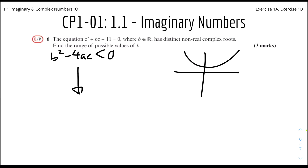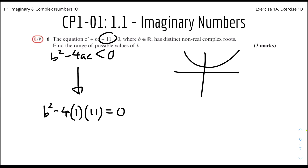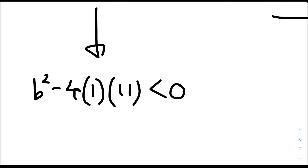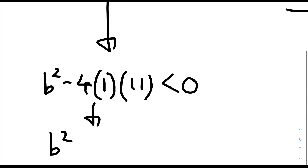In this case we need no real roots, so the discriminant is less than 0. Here b (the coefficient) squared minus 4 times 1 times 11 is less than 0, giving b squared minus 44 is less than 0.